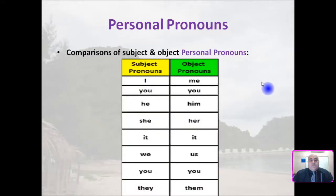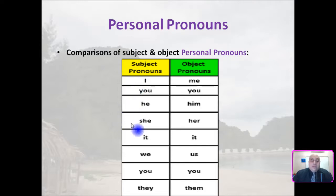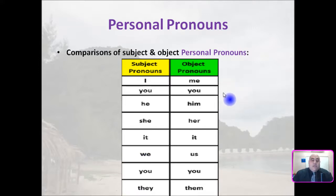Here's a comparison I put together for you — subject pronouns on one side, object pronouns on the other. Subject pronouns: I, you, he, she, it, we, you, they. Object pronouns: me, you, him, her, it, us, you, them.